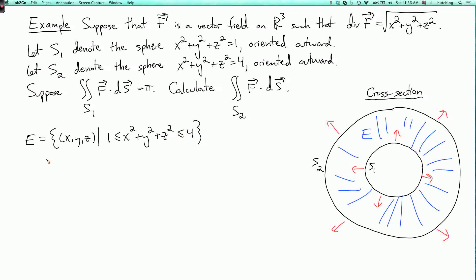And what does the divergence theorem say? Well, it says that the triple integral over E of the divergence of F dV is equal to the flux over the boundary. So the outer boundary is the integral, or double integral, over S2 of F dot dS.